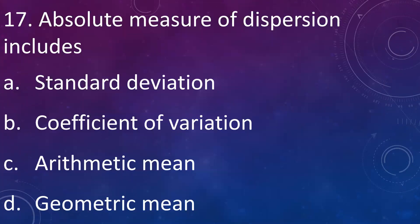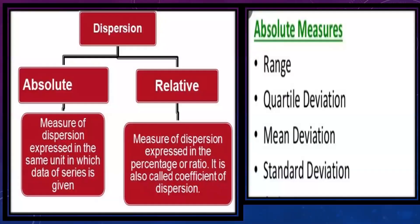Absolute measure of dispersion includes: A: standard deviation, B: coefficient of variation, C: arithmetic mean, D: geometric mean. Answer is A: standard deviation. Absolute measures are measures of dispersion expressed in the same unit in which the data of the series is given. Measures of dispersion are classified as absolute measures and relative measures. Relative measures are expressed as a percentage or ratio and are usually called coefficients of dispersion. Absolute measures include range, quartile deviation, mean deviation, and standard deviation.